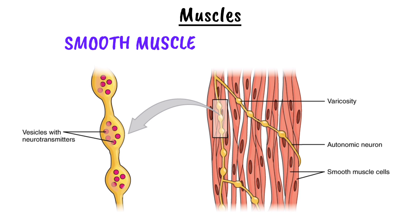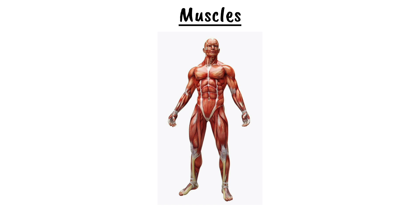In conclusion, the human body relies on three types of muscle: the skeletal, the cardiac, and the smooth muscle. Skeletal muscles enable voluntary movement, cardiac muscles keep the heart beating, and smooth muscles regulate the function of internal organs. Despite their differences in function and structure, all three types of muscles share a fundamental ability to contract, making them crucial for our survival. Understanding these muscle types helps us appreciate the complexity and efficiency of the human body.